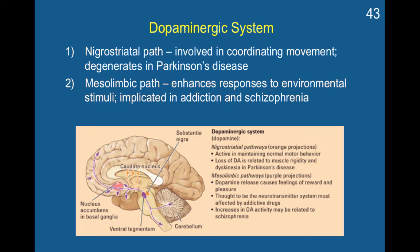Here you can see the substantia nigra in orange representing the nigrostriatal pathway. This pathway is active in maintaining normal motor behavior, and loss of dopaminergic neurons here is related to muscle rigidity, dyskinesia, and Parkinson's disease. The nucleus in the substantia nigra passes out into the caudate to help regulate these behaviors, so loss of neurons here has particular effects on movement and control.